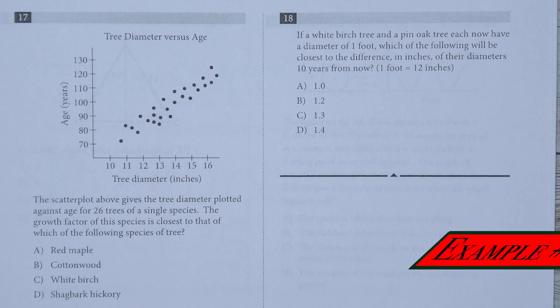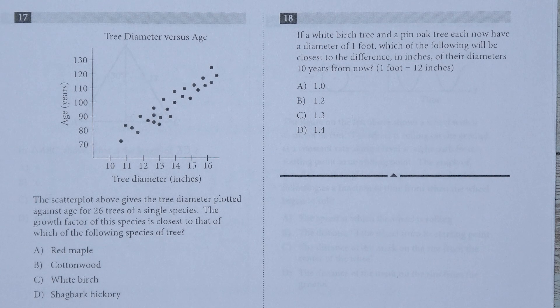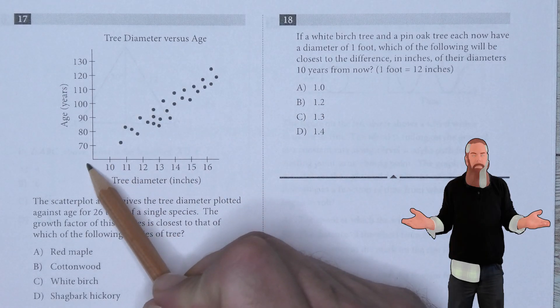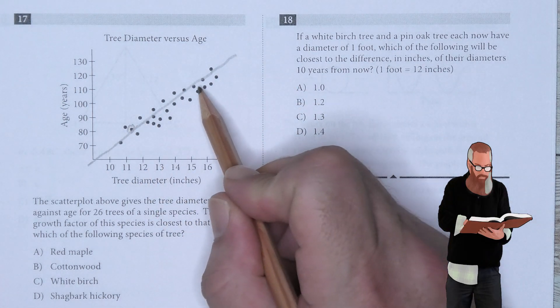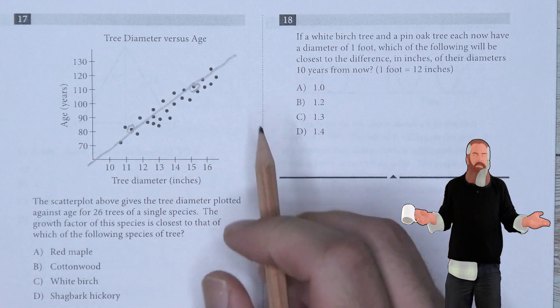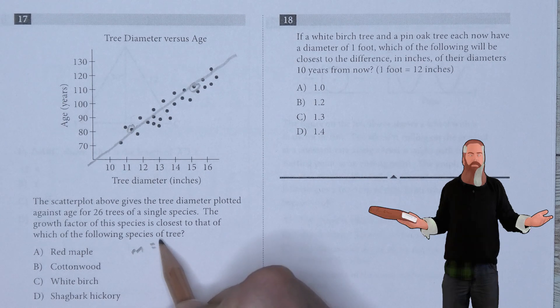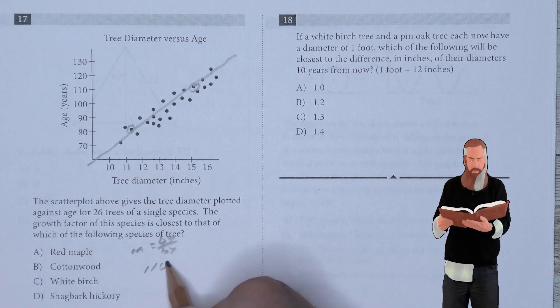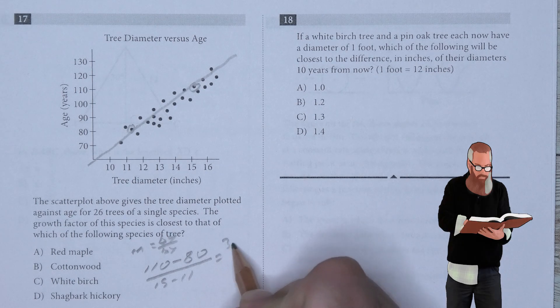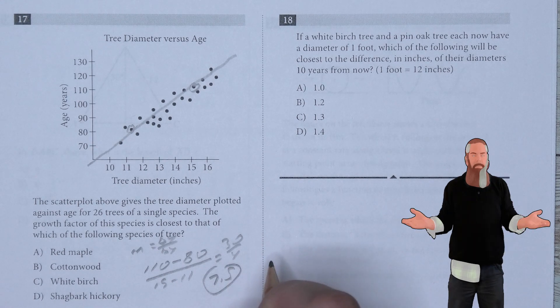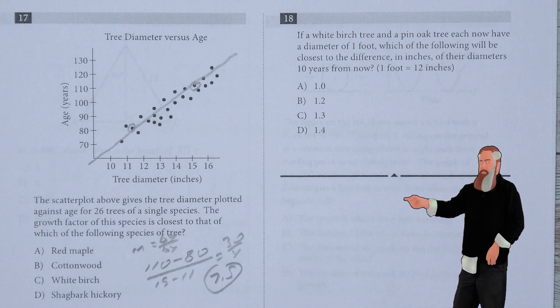The scatter plot gives the tree diameter plotted against age of 26 trees of a single species. The growth factor for the species is closest to that of which species of tree? We're looking at a line of best fit. We choose one slightly above and one slightly below. This lets us find the slope: change in Y over change in X. I can look at about 110 minus 80 over 15 minus 11, giving us 30 over 4, or 7.5. The growth factor of shagbark hickory is 7.5, which means D is the answer.